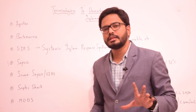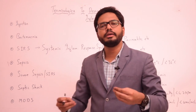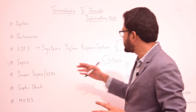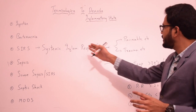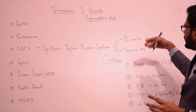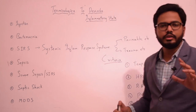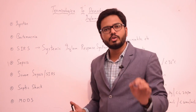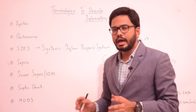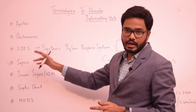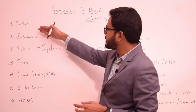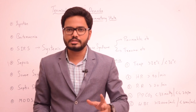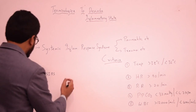Sepsis is nothing but SIRS due to a known, documented infection. SIRS can result from infective or non-infective causes, but if SIRS is due to a documented infection, we term it sepsis. That is the main difference between bacteremia and sepsis. In severe sepsis, there will be evidence of early organ dysfunction.